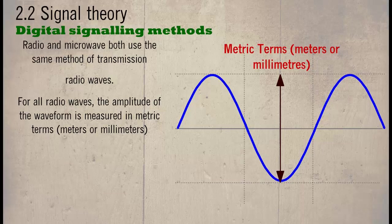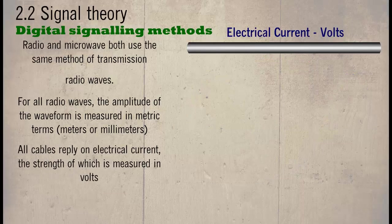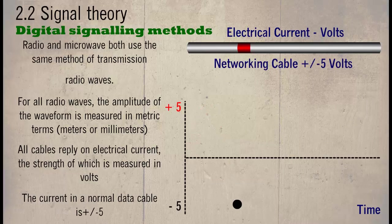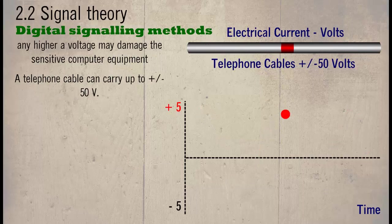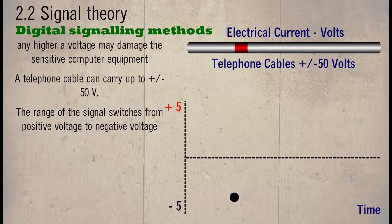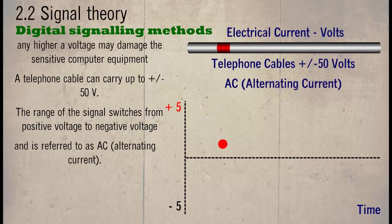All cables rely on electrical current, the strength of which is measured in volts. The current in a normal data cable is plus or minus 5 volts. Any higher voltage may damage the sensitive computer equipment. A telephone cable can carry up to plus or minus 50 volts. The range of the signal switches from positive to negative voltage and is referred to as AC, alternating current.